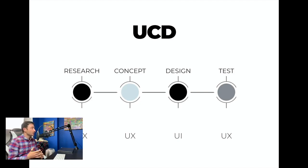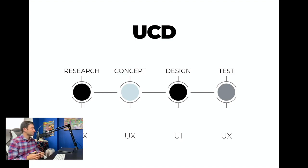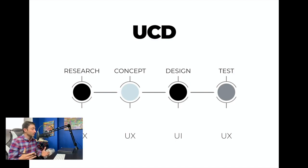A wireframe is a boxy version of a website — no images, no colors, no detailed fonts. It's simple boxes with arrows going to places and buttons, just a first digital version of the sketch. The idea of making it simple is it takes out all conversation about images, font choice, and color. You're really focusing on the flow of the website, how you move from one place to another, and all your core functionality.